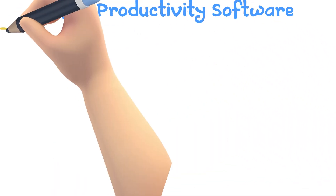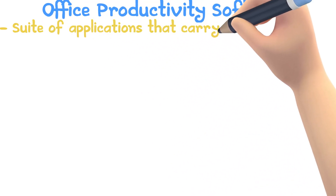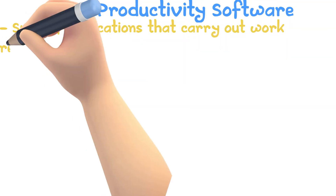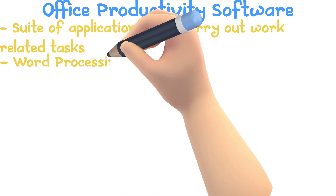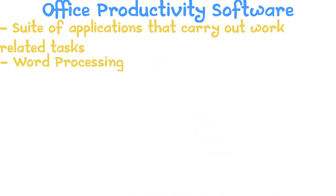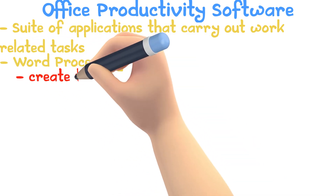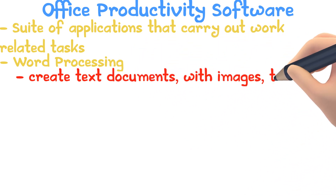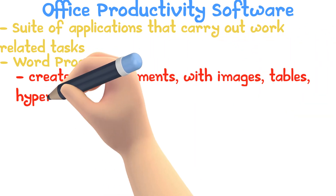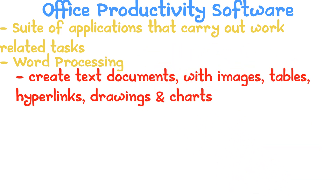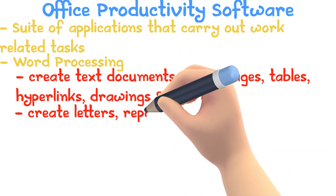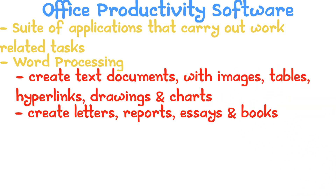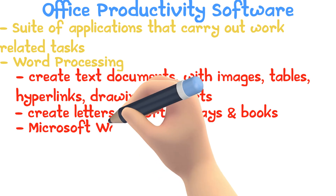Office Productivity Software is a suite of applications that carries out work-related tasks, for example, word processing. This allows the user to create text documents with some images, tables, hyperlinks, drawings, and even charts. It can be used to create letters, reports, essays, and even books. An example would be Microsoft Word.